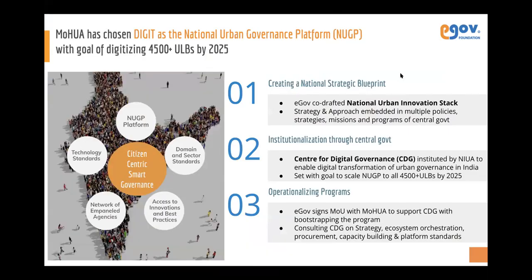As eGov, we were only able to scale to a limited number of states. Now we are directly in partnership with the Ministry of Housing and Urban Affairs, which has instituted the Centre for Digital Governance under NIUA to enable digital transformation across 4,500-plus ULBs in India. Digit has been chosen as the national urban governance platform to be rolled out across 4,500 ULBs. Empanelment is already underway, and pan-state rollout RFPs will be coming out in a few months after empanelment is complete.